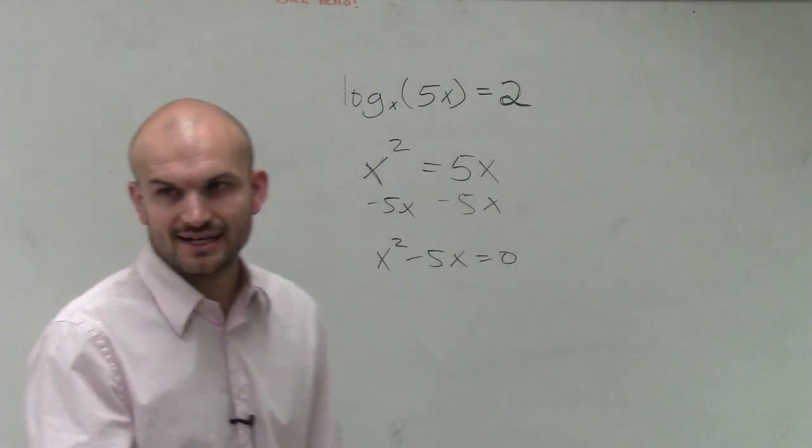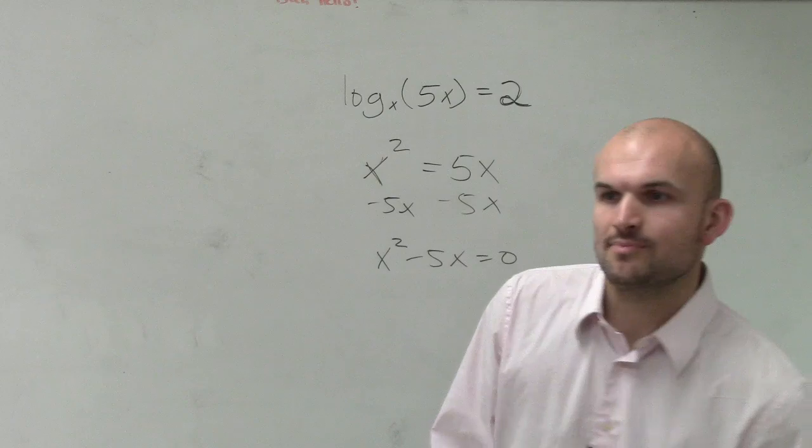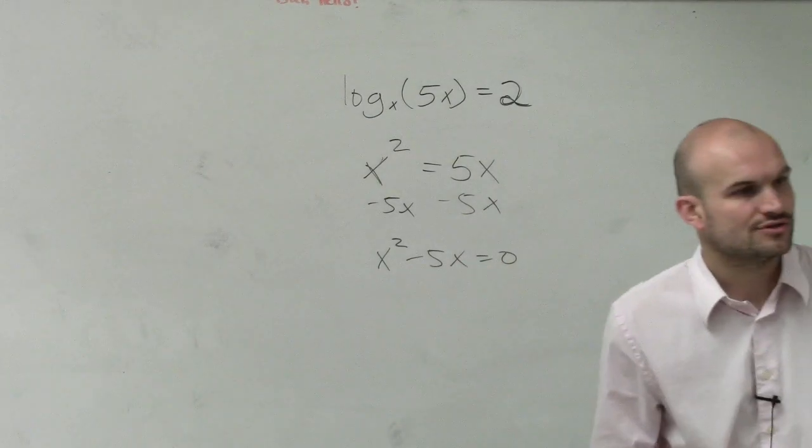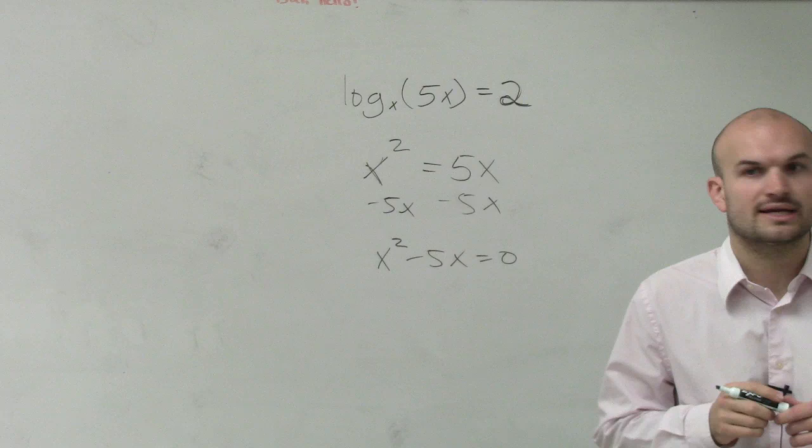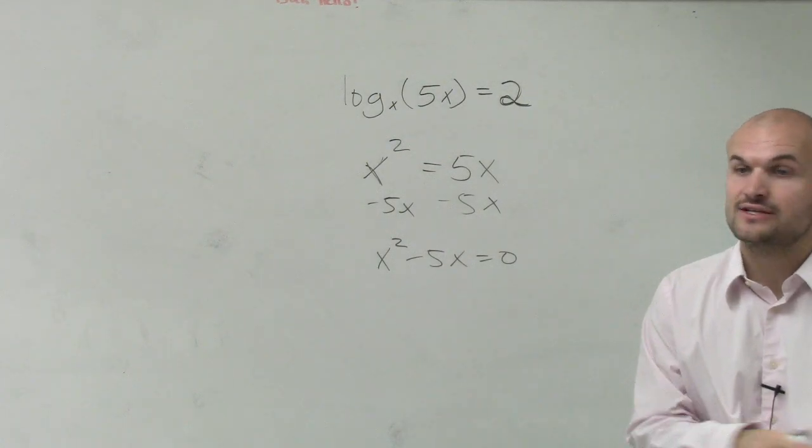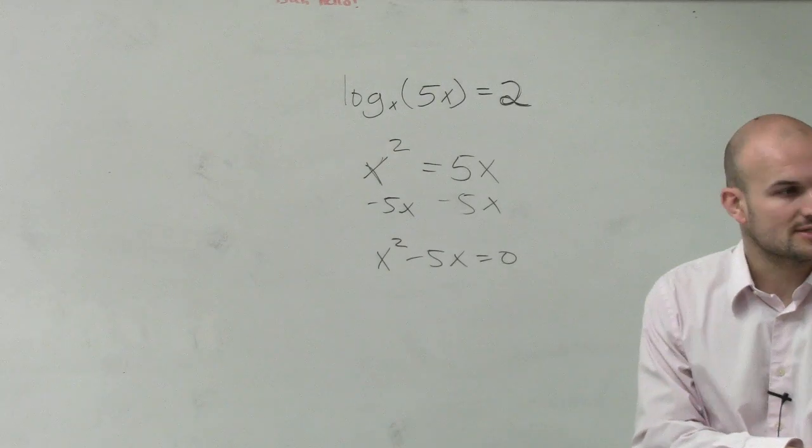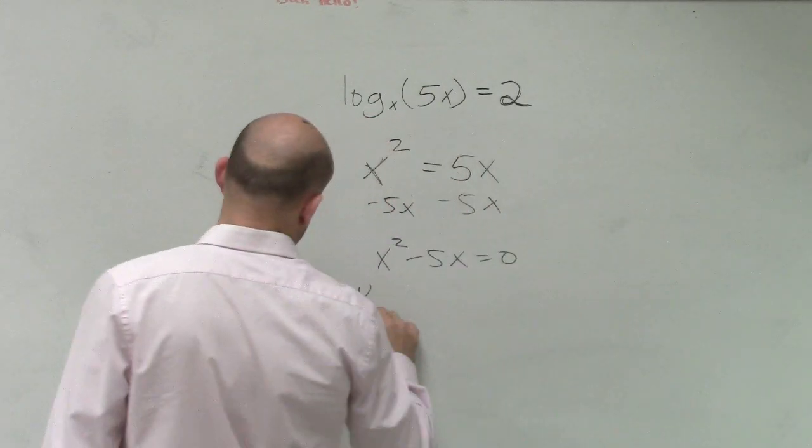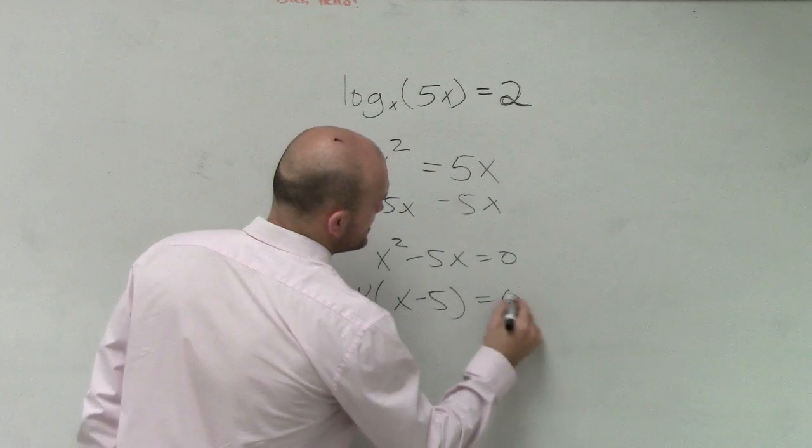Now, there's a couple different techniques that we've learned how to do this. But what is one technique I could use to solve this right here? What is one thing I could do? Factor out, right? So I can see what I can factor. And this, I can simply just factor out an x. That will leave me with x minus 5 equals 0.